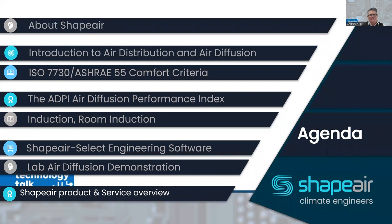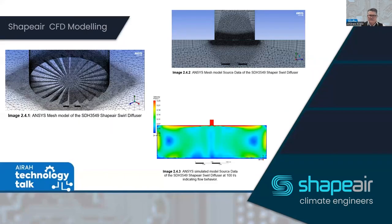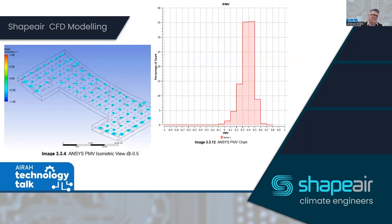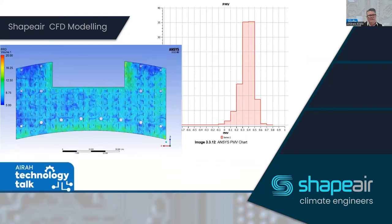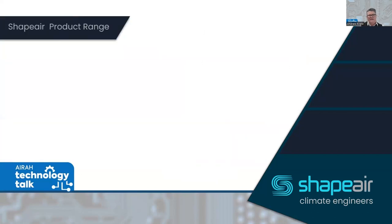We also offer CFD modelling. Our engineering department uses ANSYS software to model PMV — predictive mean vote. Here's an exact example done recently for the Melbourne Quarter job: we modelled our swirl diffusers, put them into the actual job layout, charted the predicted mean vote values, and finally the percentage of people dissatisfied. That service is available.